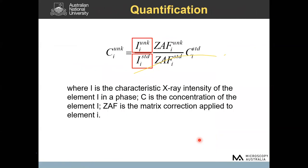By comparing the net intensity of the characteristic X-ray of elements in your unknown sample to the same X-ray in a standard reference material whose elemental concentration is known, and applying a matrix correction factor ZAF, you can obtain the concentration of the element of interest in your unknown sample. This procedure is exactly the same as how quantitative EDS works. For more details, I refer you to the video of yesterday's talk, which will be uploaded to the YouTube channel.